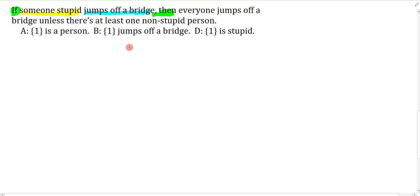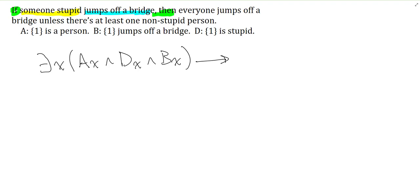Someone stupid jumps off a bridge, so that is an existential. I'm not talking about all stupid people jumping off a bridge. I'm saying something is a person and is stupid and they have the property they jump off the bridge. Now I have the conditional and this conditional, that's the green that we marked in the question.